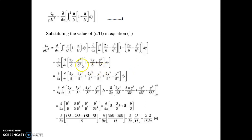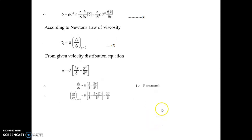Now, multiplying the values given in brackets, after multiplying, integrating, and putting in the limits, we find that d/dx of (2δ/15), or (2/15)·(d/dx)·δ. Therefore, τ₀ = ρU² · (2/15) · d(δ)/dx, which is equation number 2.